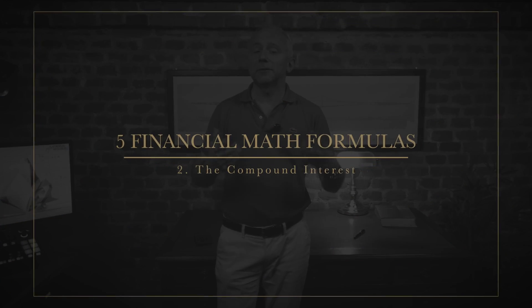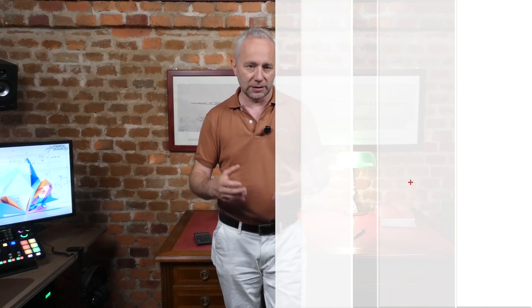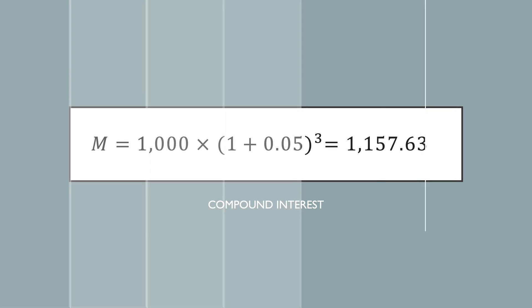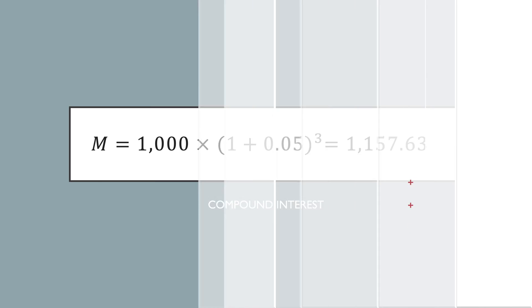Formula number two: compound interest. M is the total amount again, C0 is the initial capital, R is the interest rate, and T the number of periods — same variables as the previous one. The difference is that at the end of each period (generally one year, but can also be a semester or less), the interest is added to the initial capital, which then earns interest in turn. In the previous example with compound interest, you earn $7.63 more than with simple interest. But over decades it's huge — over 30 years, almost four times as many. This is the formula that powers retirement plans, long-term investments, and, sadly, credit card debt.